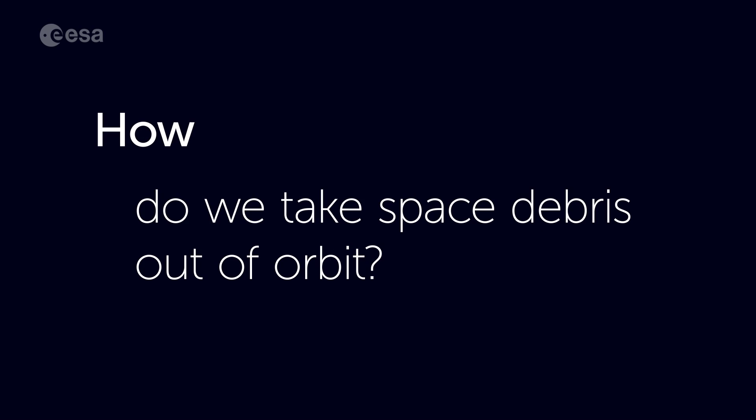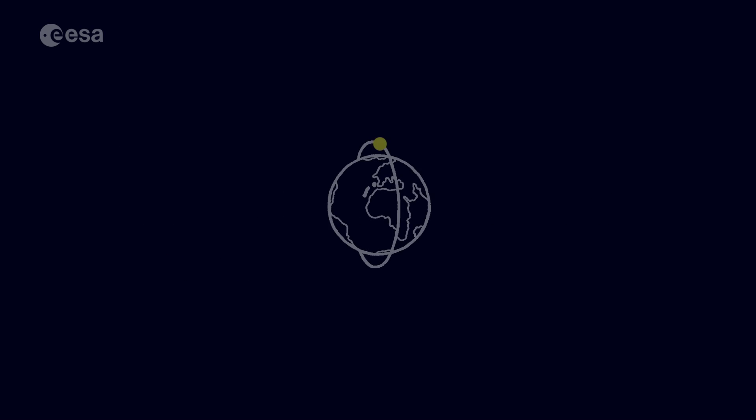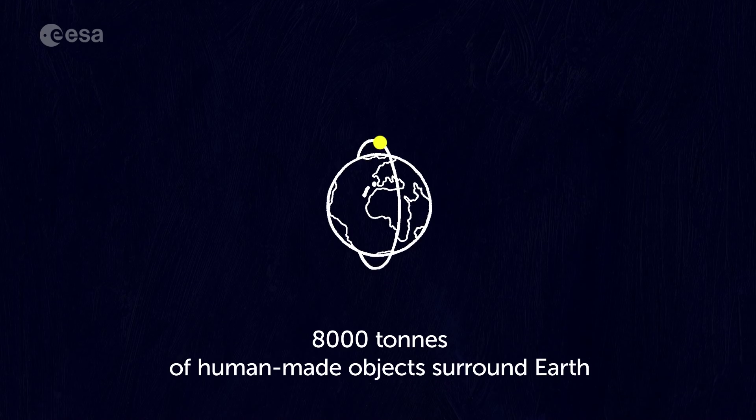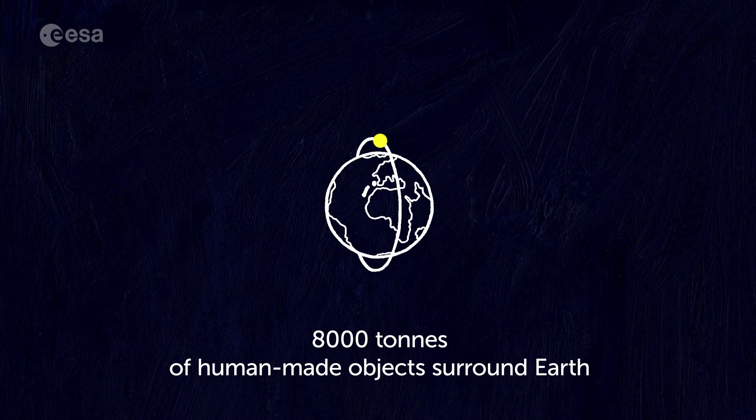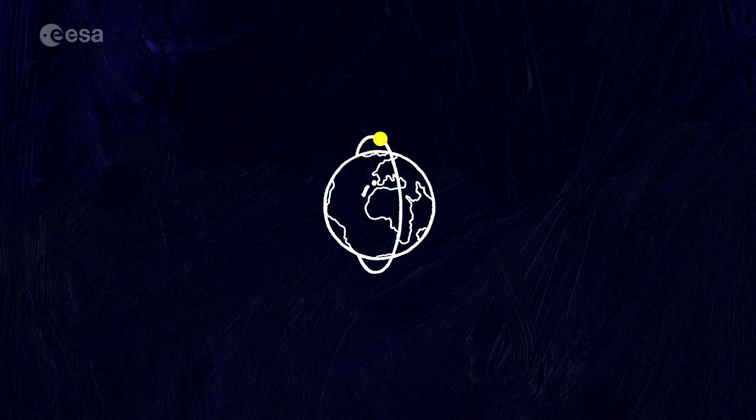How do we take space debris out of orbit? After 60 years of space activities, around 8,000 tonnes of human-made objects crowd near Earth space.